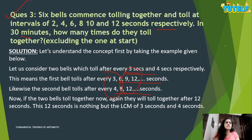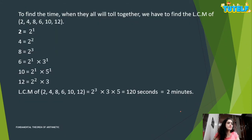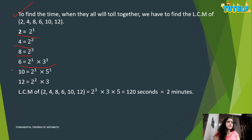To find when all six bells toll together, find the LCM of 2, 4, 6, 8, 10, and 12. Writing prime factors: 2 = 2^1, 4 = 2^2, 8 = 2^3, 6 = 2^1 × 3^1, 10 = 2^1 × 5^1, 12 = 2^2 × 3^1. LCM = 2^3 × 3^1 × 5^1 = 120 seconds, which equals 2 minutes.